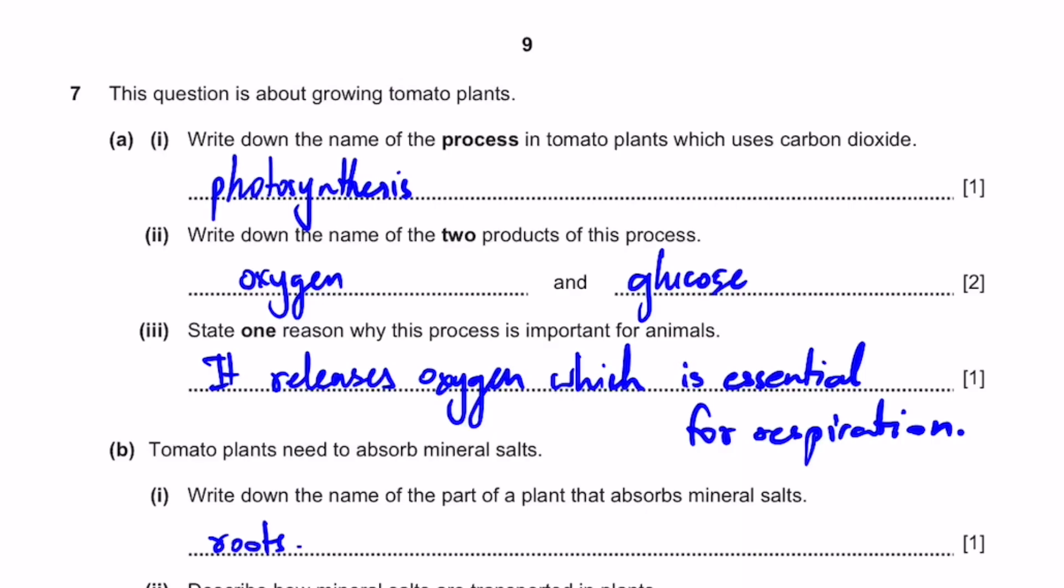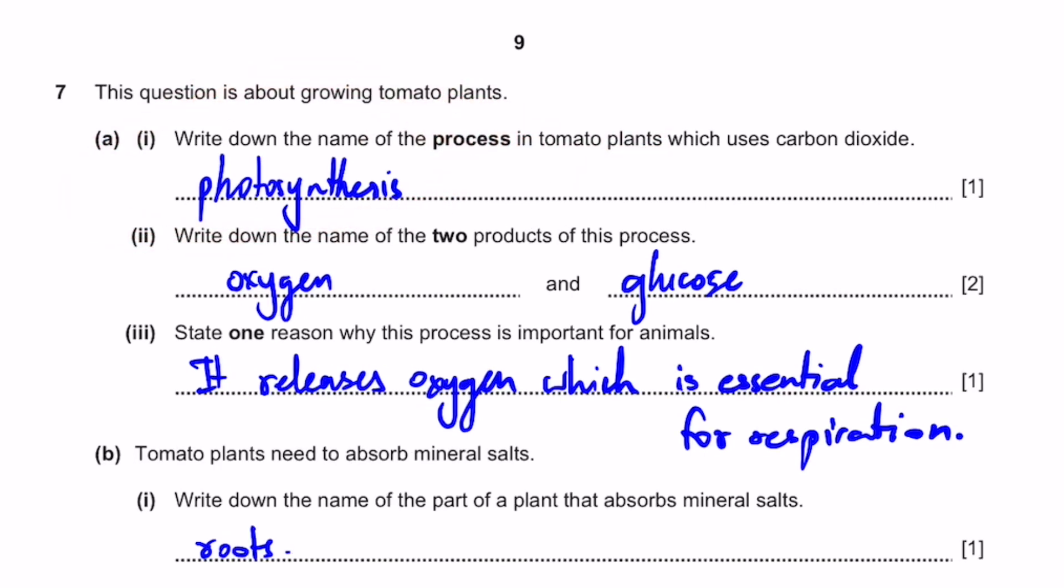Question 7. This question is about growing tomato plants. Write down the name of the process in tomato plants which uses carbon dioxide. It's not just tomato plants. It's all plants. It's photosynthesis. Write down the name of two products of this process. There's only two. It's oxygen and glucose.